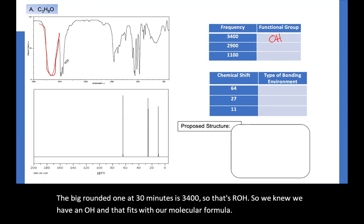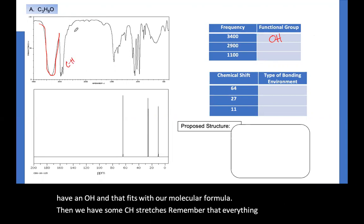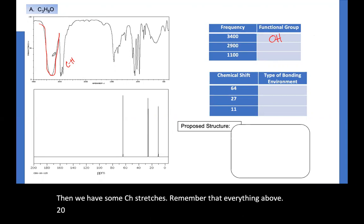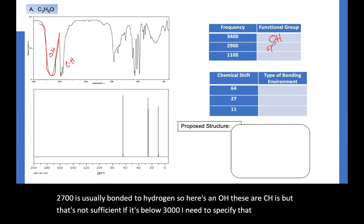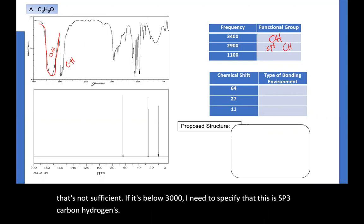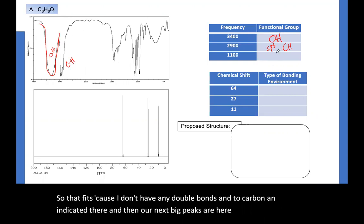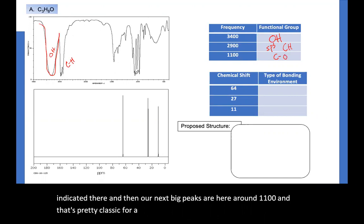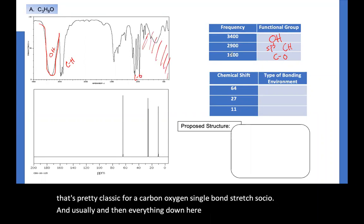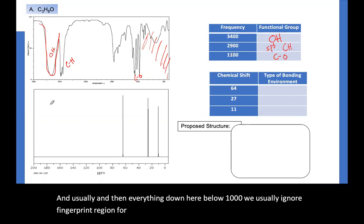Then we have some CH stretches. Remember that everything above 2700 is usually bonded to hydrogen. So here's an OH. These are CHs, but that's not sufficient. If it's below 3000, I need to specify that this is SP3 carbon hydrogens. So that fits, because I don't have any double bonds to carbon indicated there. And then our next big peaks are here around 1100, and that's pretty classic for a carbon oxygen single bond stretch, so CO. And then everything down here below 1000, we usually ignore fingerprint region for this course.